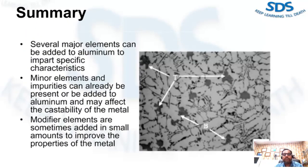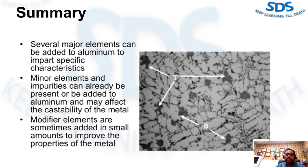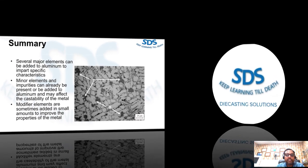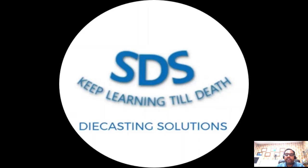In summary, there are several major elements that can be added to aluminum to impart characteristics to castings that they would not have if only aluminum was used. Minor elements and impurities can already be present or added to aluminum; in excess they will affect the castability of the metal. Modifier elements are sometimes added in small amounts to improve the properties of the metal. Thank you very much and keep learning.